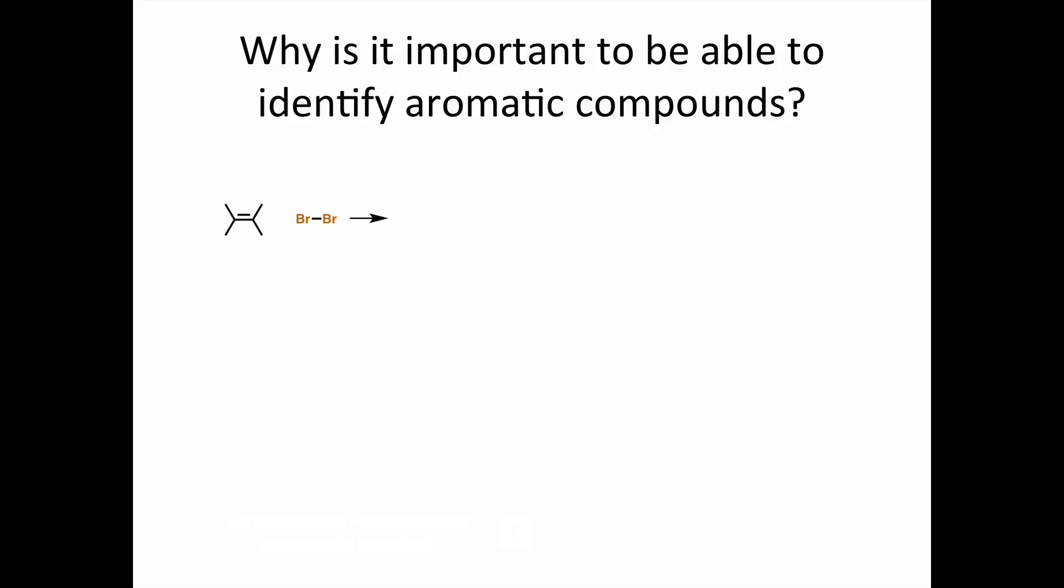We need to be able to identify aromatic compounds because they have unique reactivity. When an alkene is treated with bromine, the double bond acts as a nucleophile, forming a cation that is attacked by Br-. The end result is the addition of Br2 across the double bond. When benzene is treated with bromine, an iron catalyst is required because of benzene stability.